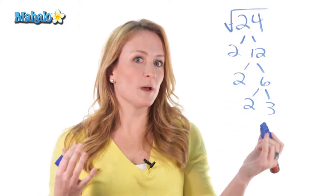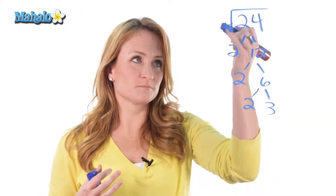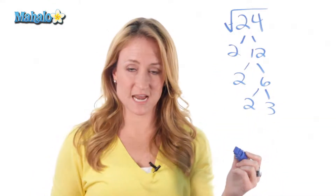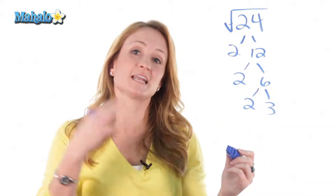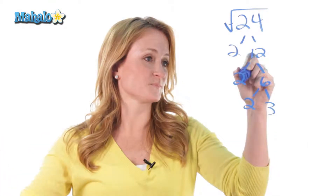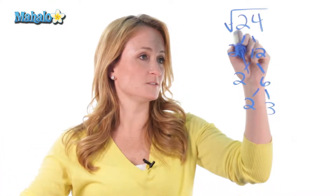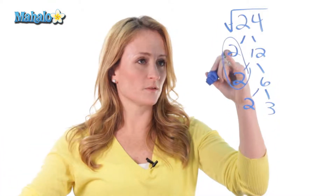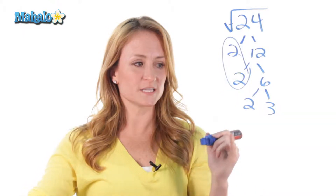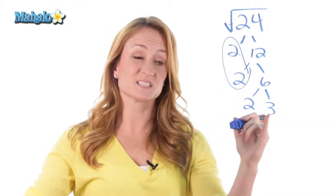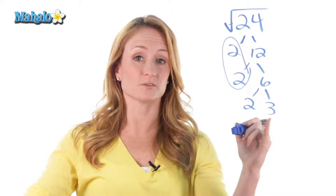So remember the rule: the square root is considered a trap, and it has to have a partner to get out of the trap, so pair them up. So we have these 2's pairing up, and those are already paired up and taken, so this 2 doesn't have a partner. This 3 doesn't have a partner either.